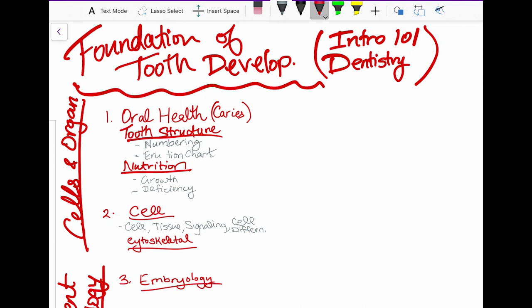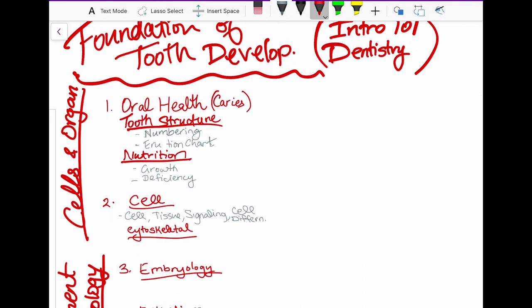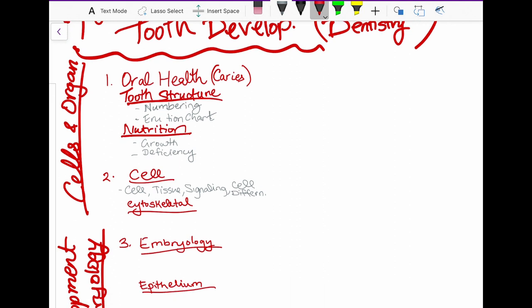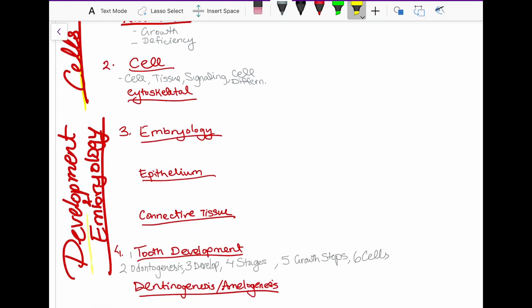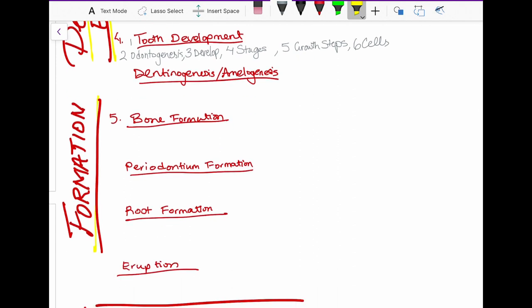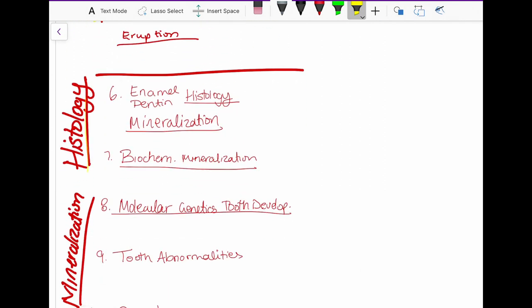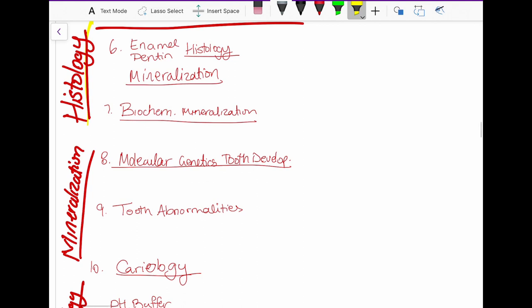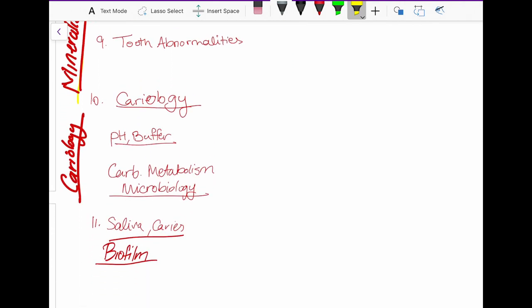So we will talk about the basic principles of tooth development starting with, as you can see, the cells and organs. Then we'll talk about the development and the embryology. Then we talk about the formation of the tooth and all the surrounding tissue. And then we will discuss a little bit of histology, what we can see those cells doing under the microscope. Then we will talk about mineralization component of tooth development. Then finally cariology, our final end product.